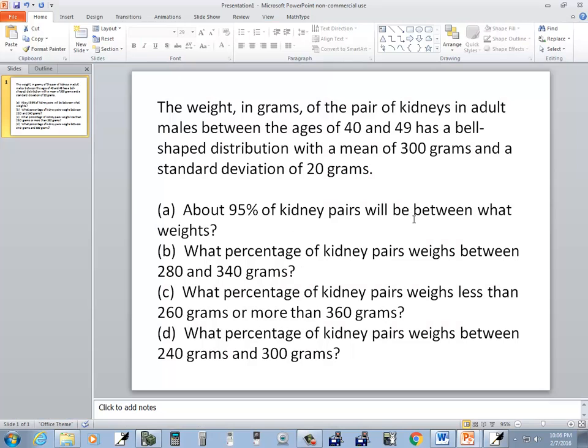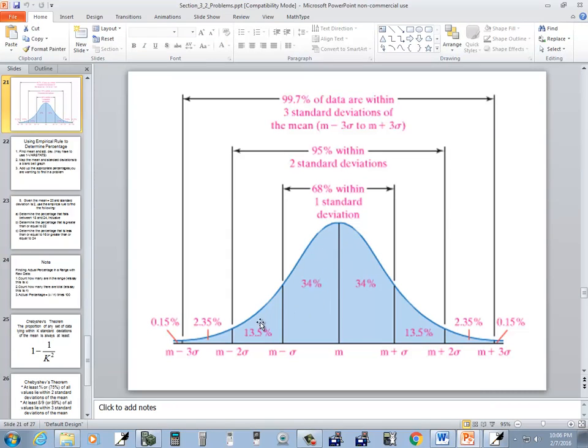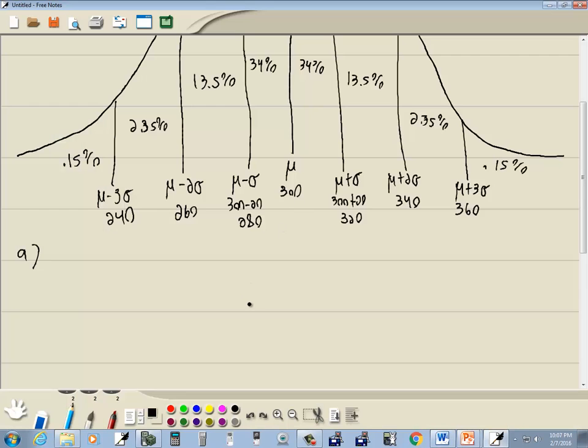A, about 95% of kidney pairs fall between what weights? Well, if I go over to my original document, 95% is right here, and that's within two standard deviations. So what they're really asking is coming from two standard deviations on both sides, that's 95% of our data. So it's between 260 to 340.